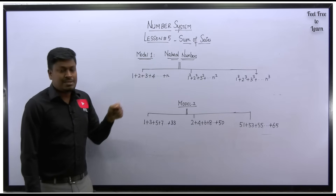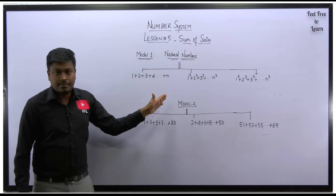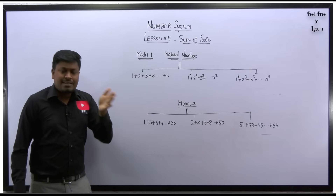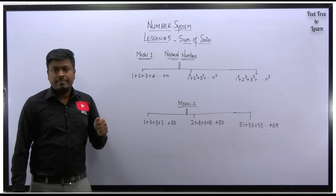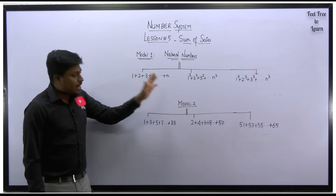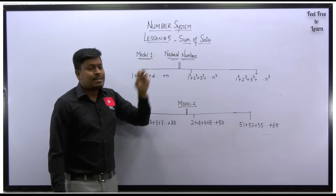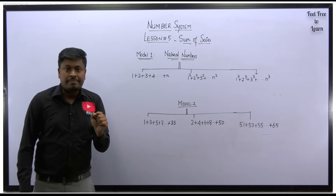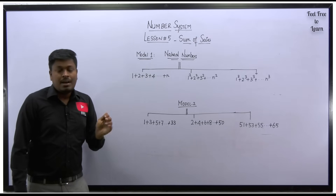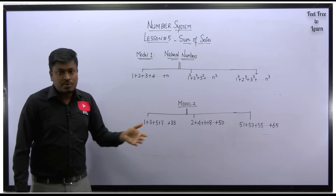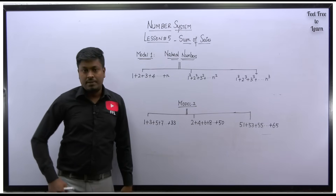The concept of sum of series — we have learnt all these complete concepts in schooling itself, while we were at 5th standard, 6th standard. We have learnt the entire concept. So the sum of series is categorized into two model questions: model number 1 is based on natural numbers, and model number 2 is based on odd numbers, even numbers, and a different sort of numbers.